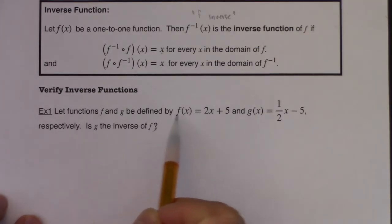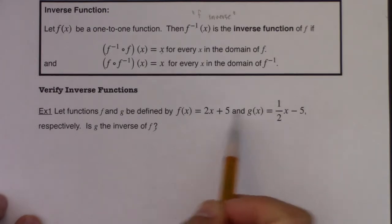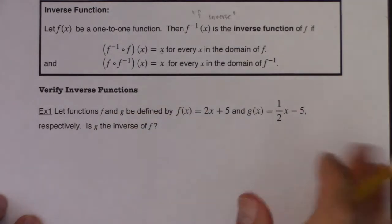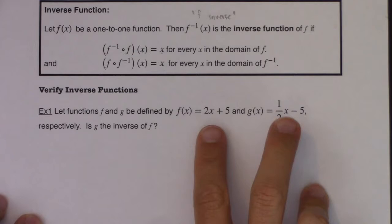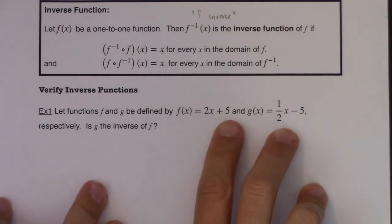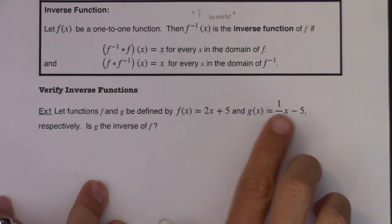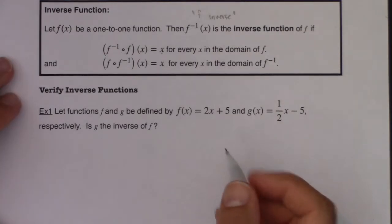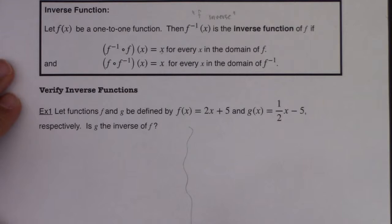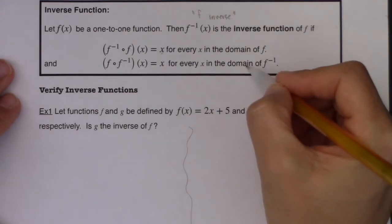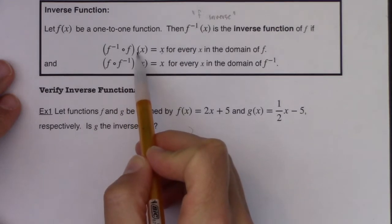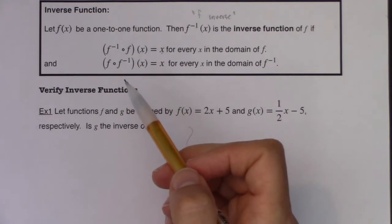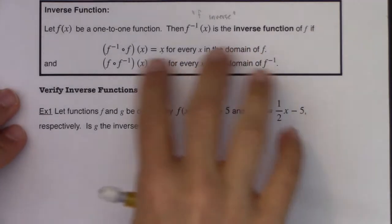Let f and g be defined by f of x equaling 2x plus 5, and g of x equaling one half x minus 5, respectively. Is g the inverse of f? I have two functions — both lines. This one has a slope of 2 and a y-intercept of 5; this one has a slope of one half and a y-intercept of negative 5. I'll draw a separator because there are two conditions to check: that g of f of x equals x, and that f of g of x equals x. Both will have to work.